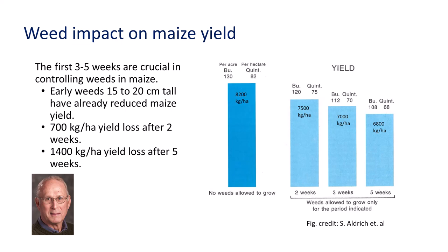Weeds compete with crops for nutrients, water, and light. The graph shows the importance of early weed control in a maize crop. Good weed control in the first five weeks is crucial. Allowing weeds to grow for only two weeks reduced grain yields by 700 kg per hectare compared to a clean-tilled field. The grain loss was 1,400 kg per hectare when weeds were allowed to grow for five weeks. When weeds are only 15 to 20 centimeters tall, they have already reduced grain yield.